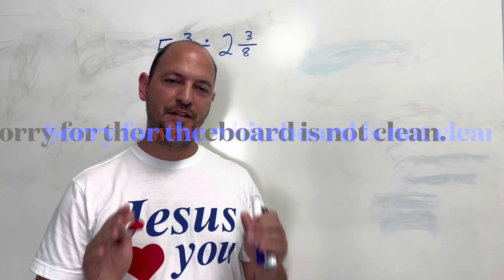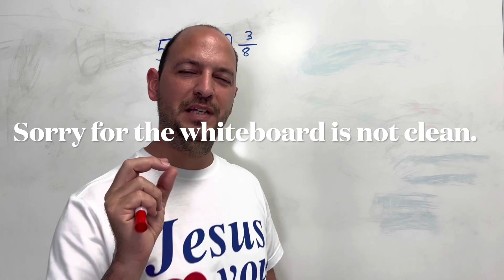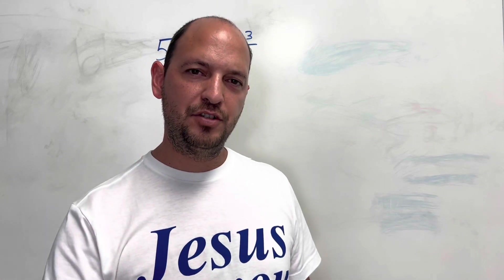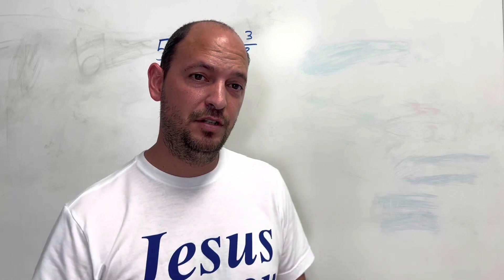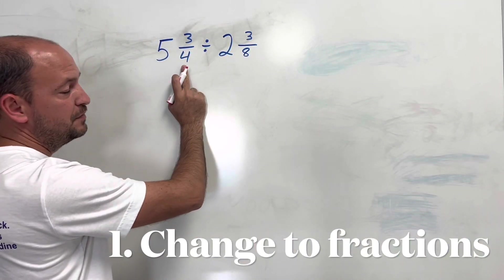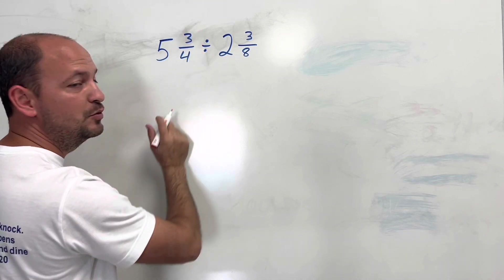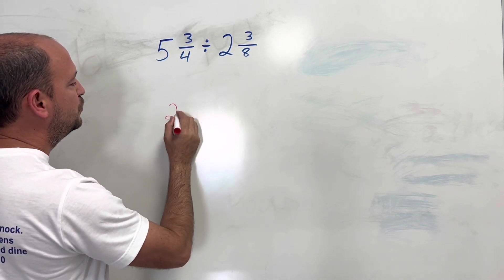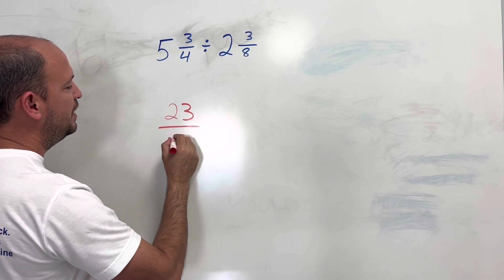Dividing mixed numbers. The first step is to change the mixed number into a fraction. And then we do basically a fraction division. So how do we do that? We multiply here. 5 times 4 is 20, plus 3 is 23. 23 divided by 4.